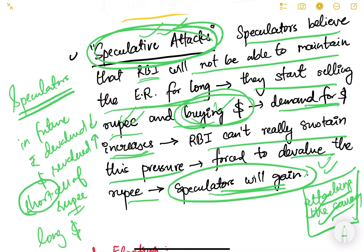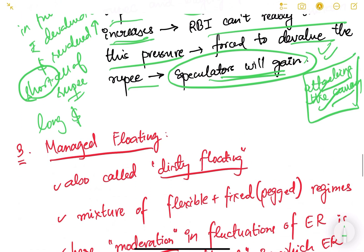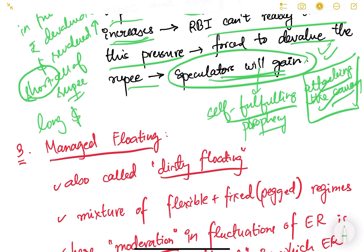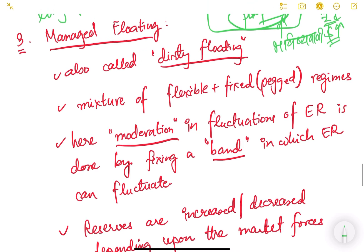This entire procedure is known as speculative attacks, and it was one of the prime reasons for the Asian financial crisis of 1997-98, which we will study later. This is a kind of self-fulfilling prophecy — speculators began by believing that the rupee would fall and the dollar would rise, and because of their actions, this actually happened.